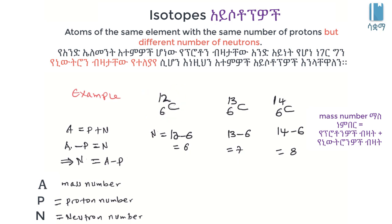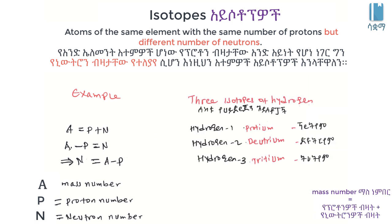The most abundant carbon isotope is Carbon-12. Hydrogen also has isotopes. The hydrogen atom has one proton, and the proton number is the same across hydrogen isotopes, but the mass differs.